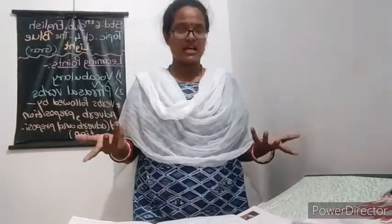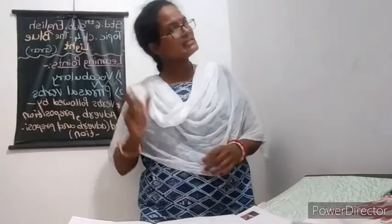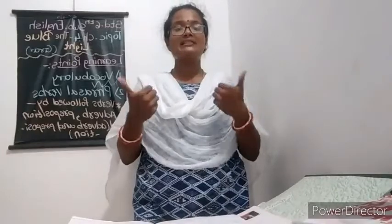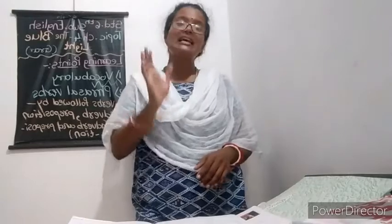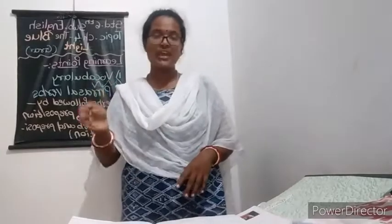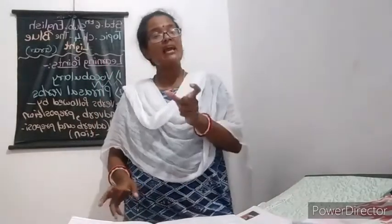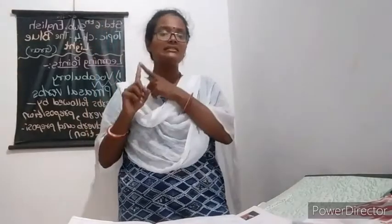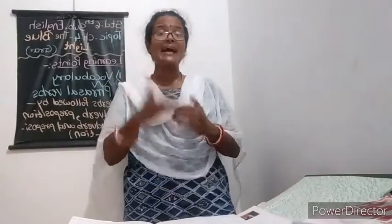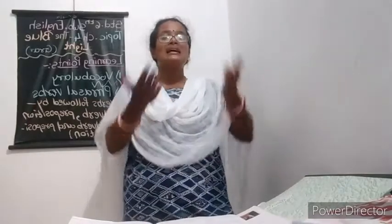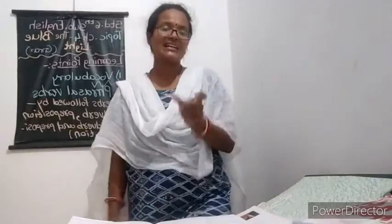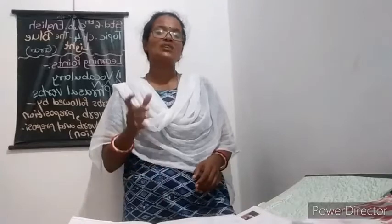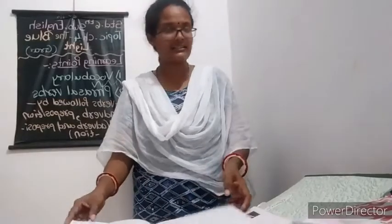Next example: We fell. Here we is the subject, fell is the verb, but there is no object to receive its action — that's why fell is an intransitive verb. Next: They worked hard. They is the subject, worked is the action word, but there is no object to receive the action of working hard — that's why worked is the intransitive verb.